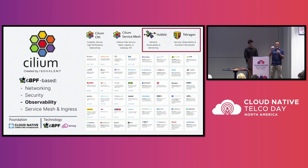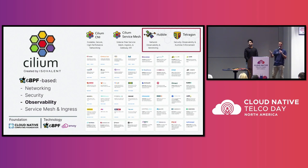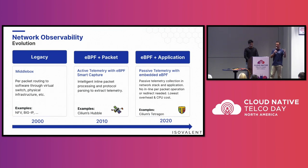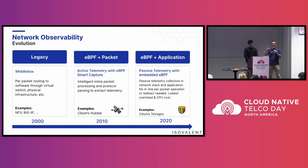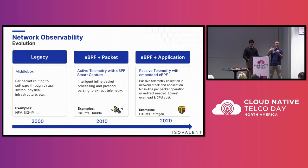In today's presentation I want to specifically focus on the observability portion, even though Cilium of course provides a wide variety of use cases including SRV6 service chaining, micro-segmentation, overlays, BGP, and so on. We see network observability as having evolved from the old middle-box stage to two new stages: the initial one using eBPF for packet processing and protocol parsing directly in the stack — that's traditional observability, which is very much what Hubble is doing — and now a new way of gaining network observability and security using Tetragon.